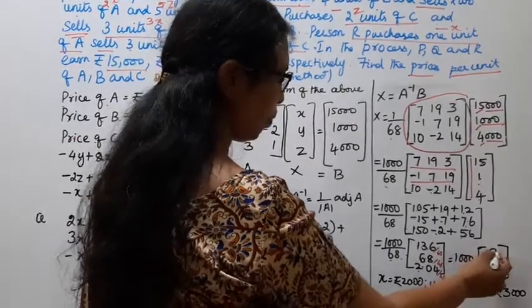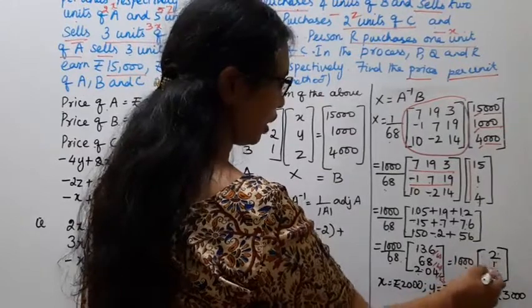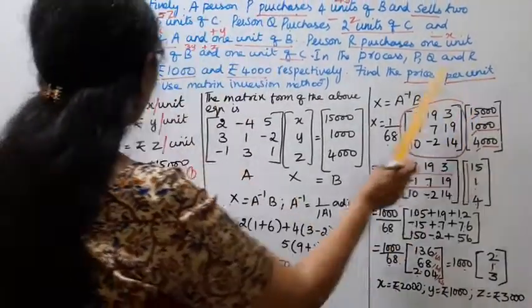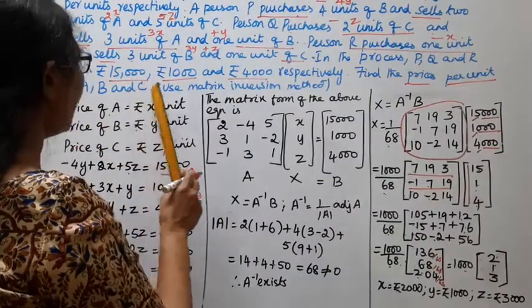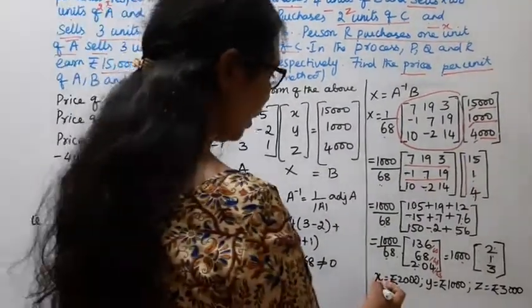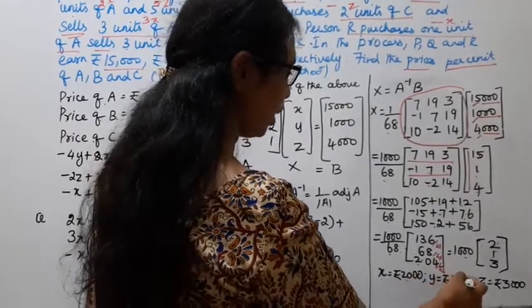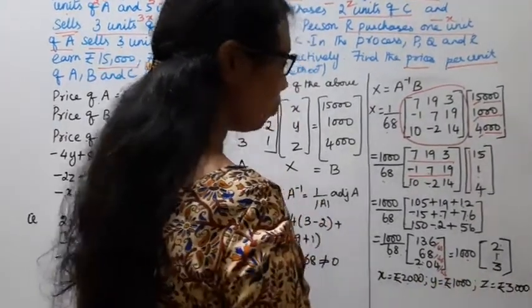Now, 2,000, 1,000, 3,000. X equal to rupees 2,000. Find the prices per unit of A, B and C. X equal to rupees 2,000. Y equal to rupees 1,000. Z equal to rupees 3,000.